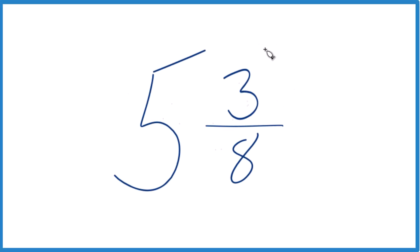If you're given the mixed number 5 and 3 eighths and asked to get that to an improper fraction, here's how you do it.